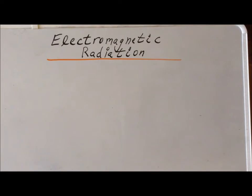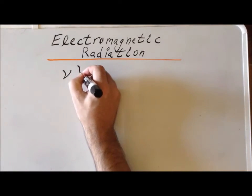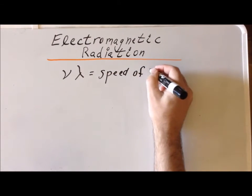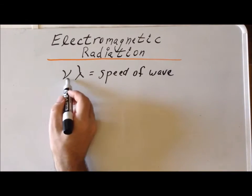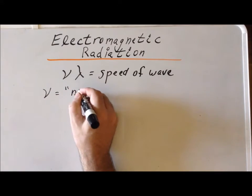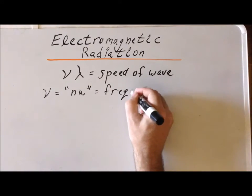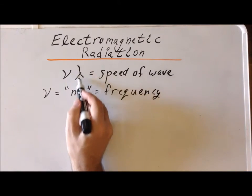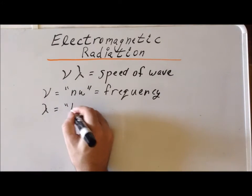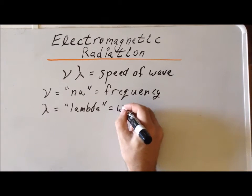A relationship that is true for any type of wave is the following: if we multiply nu times lambda, we get the speed of the wave. This letter here, which kind of looks like a V, is actually the Greek letter nu, and nu is the frequency of the wave. This letter here that looks like an upside down Y is the Greek letter lambda, and this is the wavelength of the radiation.